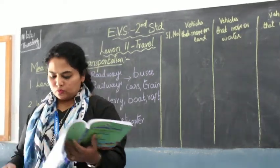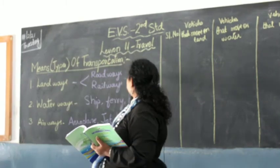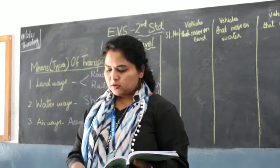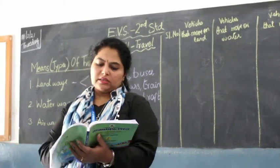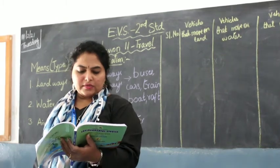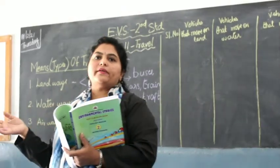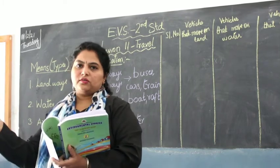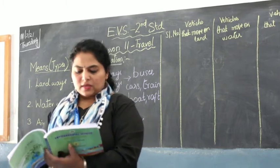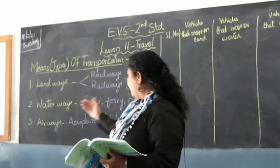Next, write any four vehicles that move on land. Examples: buses, cars, trains, bikes, bicycles, bullock carts — all these move on land, so they are examples of landways. Have you seen vehicles that move on water? Write their names and whether you've traveled in them. Some of you may have crossed a small river on a raft or boat, or traveled on a ferry or ship. Vehicles that move on water include: boat, ferry, ship.